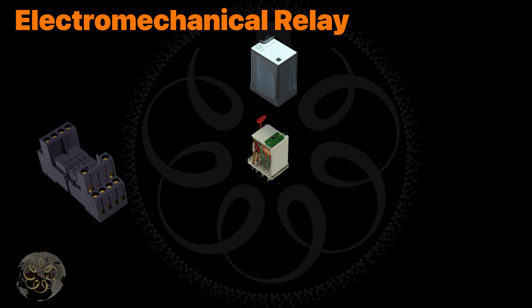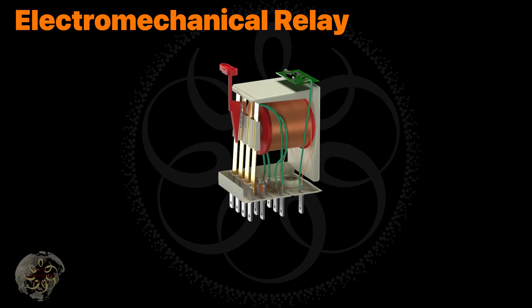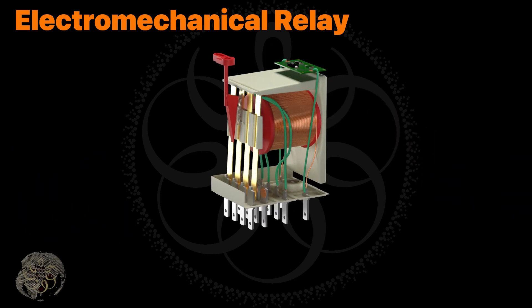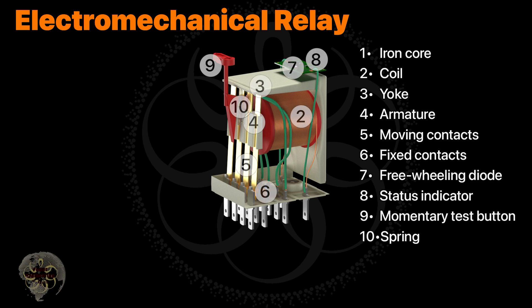Let's take a closer look at the internal parts of an electromechanical relay. Inside a relay, you'll find components like iron core coil, yoke armature, moving contacts, fixed contacts, freewheeling diode, status indicator, momentary test button, and spring. Although some relays may not have all these components.